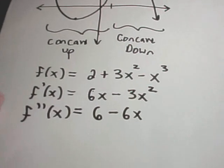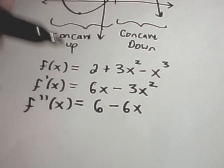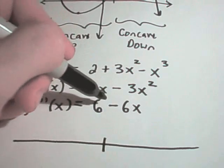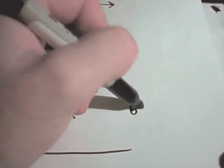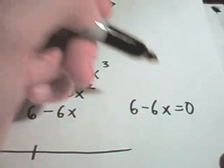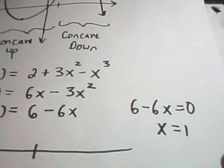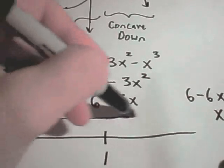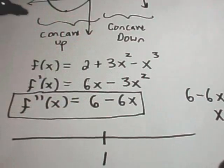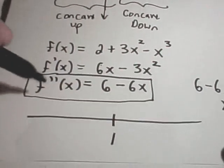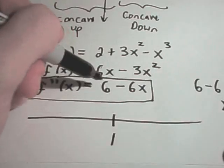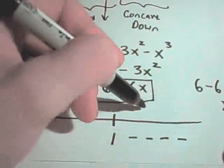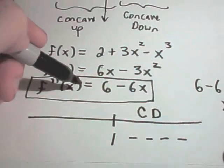Just like when you're finding increasing and decreasing, you take the first derivative and figure out where it's undefined or equal to 0. In this case, if we set 6 - 6x equal to 0, we get x = 1. We add 6x and divide both sides by 6. Now we take a number larger than 1 and plug it into the second derivative — we get a negative number, which means the function is concave down over that interval.